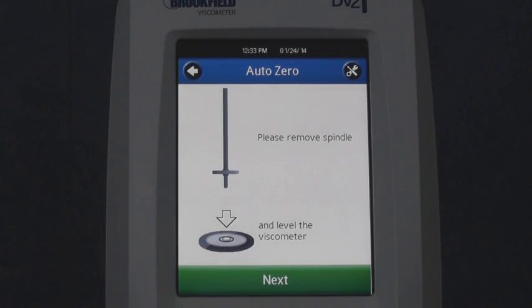You then want to test the viscometer to ensure that the screen protector was applied properly. If done properly, the DV2T viscometer will respond when you press the touch screen.